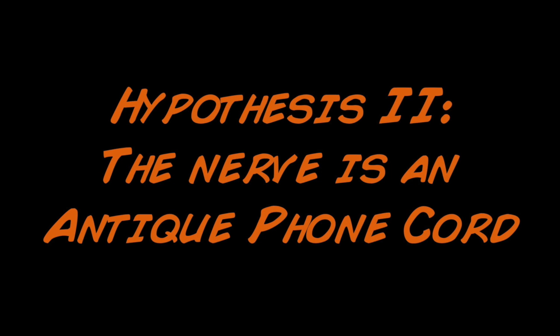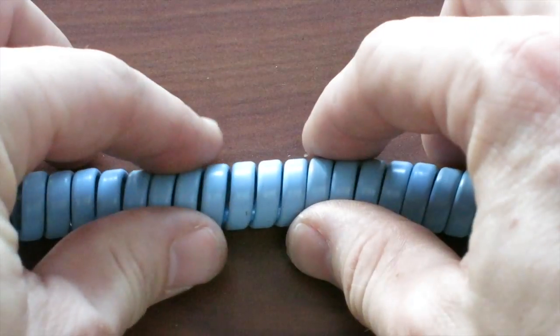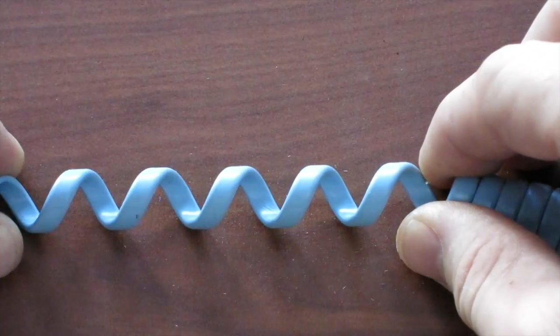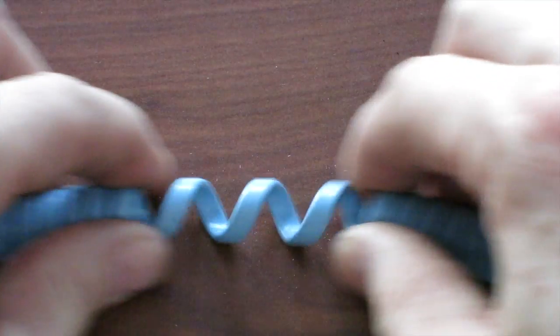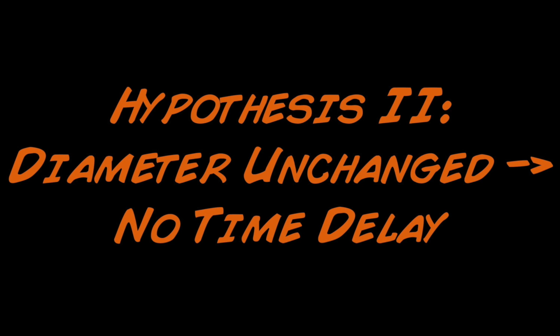We have another hypothesis, that the nerve is like an antique phone cord. As you stretch it, there is no change in diameter, as there is sufficient slack to tolerate compression and extension. In this condition, since there will be no change in diameter, there will be no change in length constant, and hence, no time delay when you stretch the nerve.